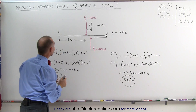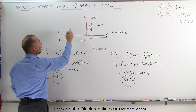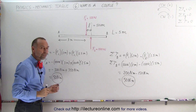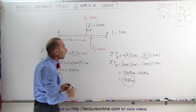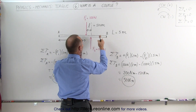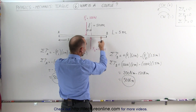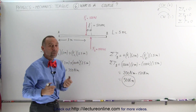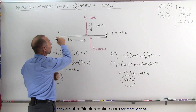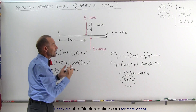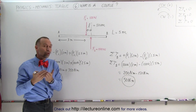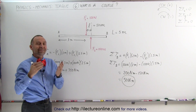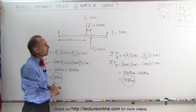Notice — when we calculated the torque relative to point A of those two forces, we got 50 Newton meters. When we calculated the torque about point B of those two forces, we also got 50 Newton meters. In other words, it doesn't matter what pivot point we take on the beam — the total torque caused by those two forces will always be exactly 50 Newton meters.